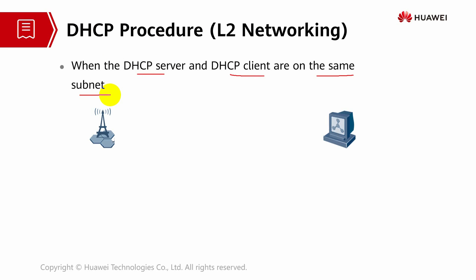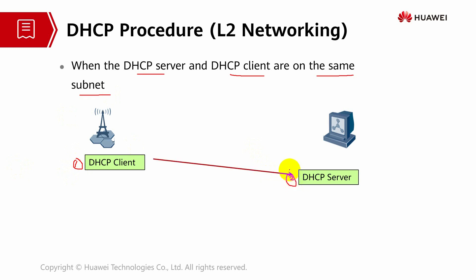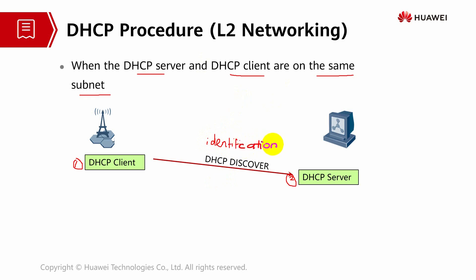There is no relay agent here - we have the client and we have the server, and the communication will be directly between them with no gateway in between. After the DHCP client starts, it broadcasts the DHCP Discover packet to the server. The packet will contain some identification information about the client itself.